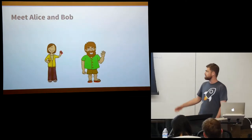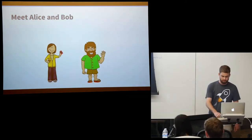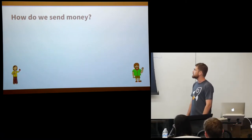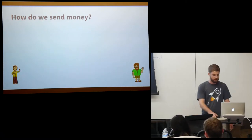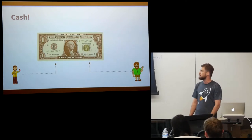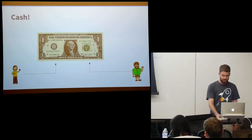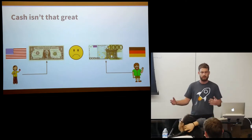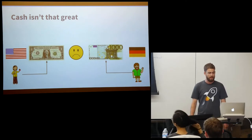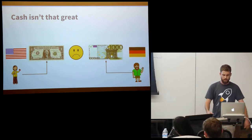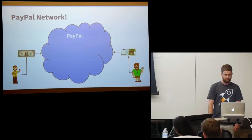So meet Alice and Bob — they're our volunteers tonight. They want to send each other money. How does that happen? Alice wants to send Bob money. Well, she could use cash. Cash is great, cash is easy, people know how to use cash.